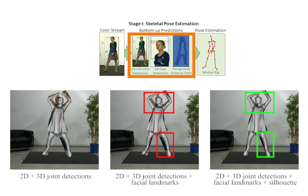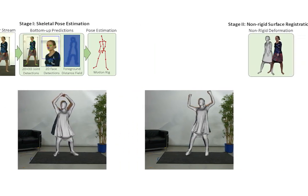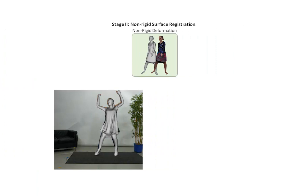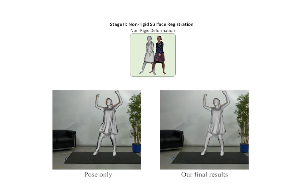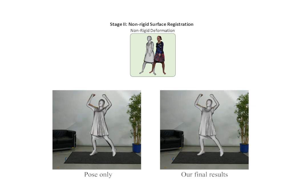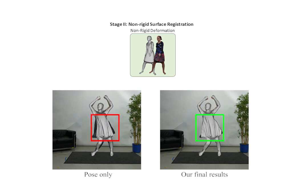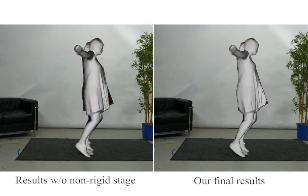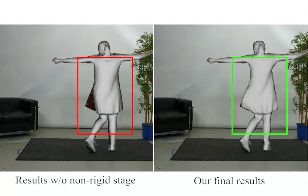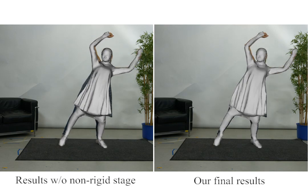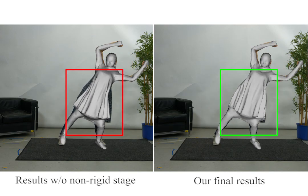However, the skeleton-driven surface does not accurately match the input images, since the non-rigid deformation of skin and clothes cannot be modeled by skeleton motion. Therefore, in our second stage, dense non-rigid deformation of the surface is captured by minimizing a template-to-image alignment energy designed for real-time performance. Note that the non-rigid deformation of loose clothes, which cannot be modeled by skeleton tracking alone, is accurately captured by our full pipeline.